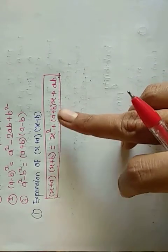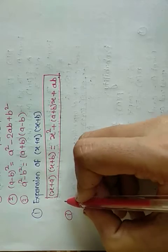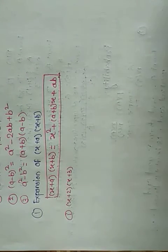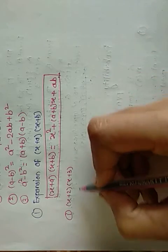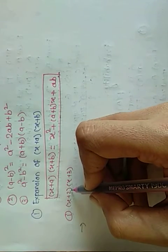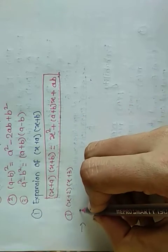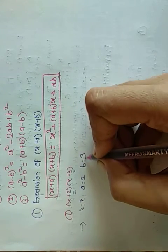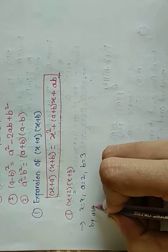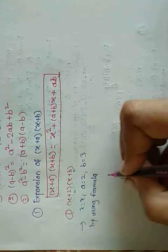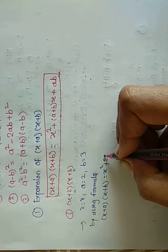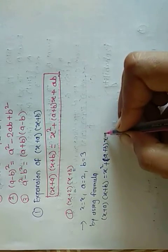Let's see the examples. The first example is (x+2)(x+3). Here, x is as it is, the value of a is 2, and the value of b is 3. By using the formula: (x+a)(x+b) = x² + (a+b)x + ab.